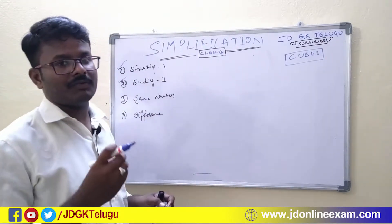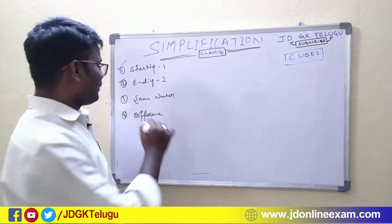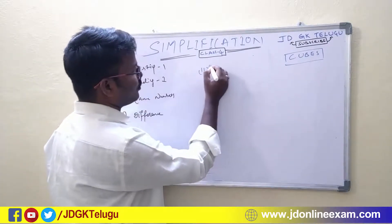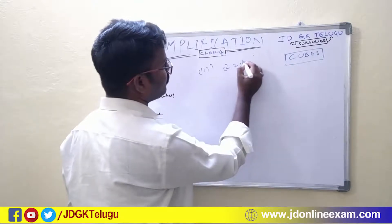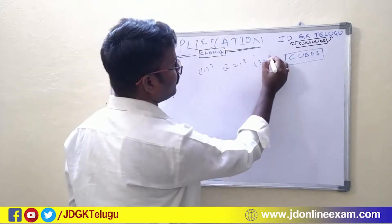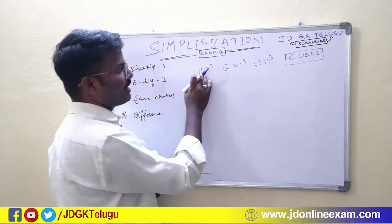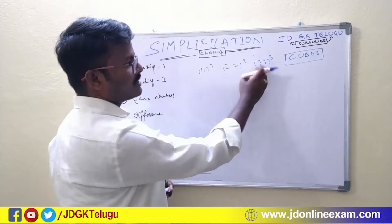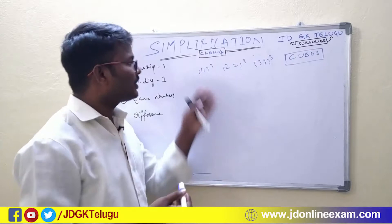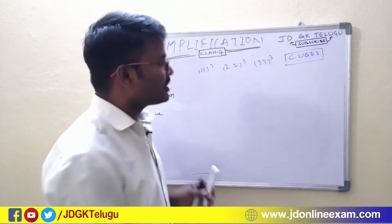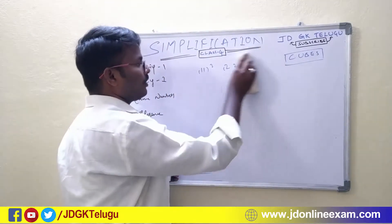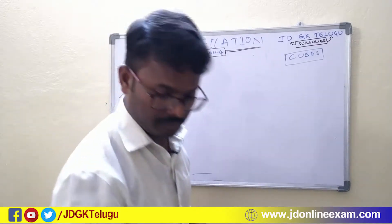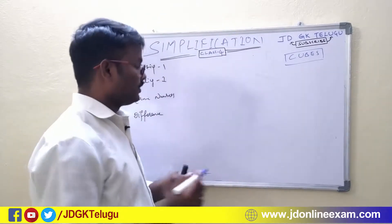I will be simplifying the same numbers. For example, 11 cube, 22 cube, 33 cube — same numbers: 1 and 1 same, 2 and 2 same, 3 and 3 same. All of these cubes will be simplified. The simplification is very important. Let us start.